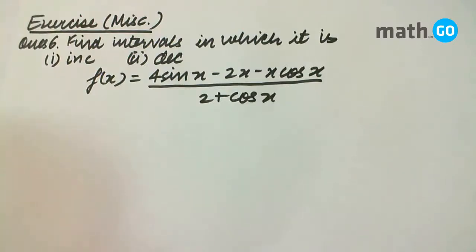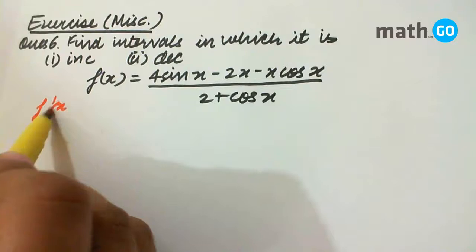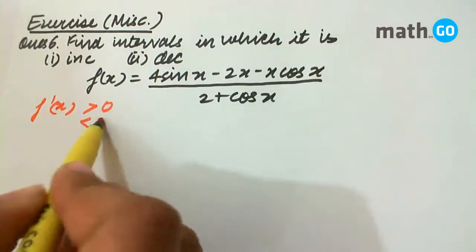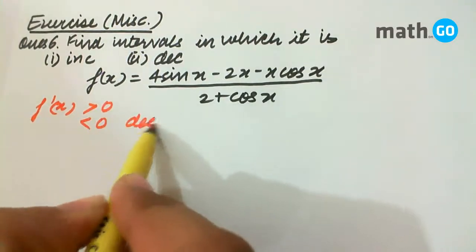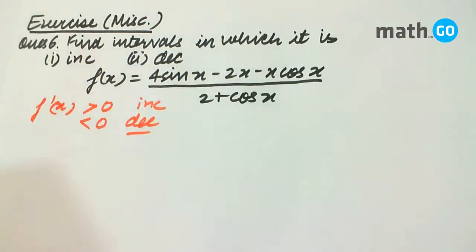Very simple procedure. We find f dash x and put it greater than 0 for increasing and less than 0 for decreasing. So we find f dash x.